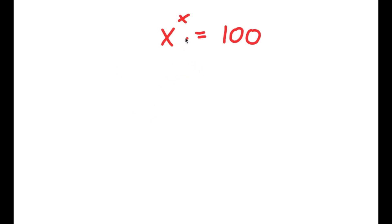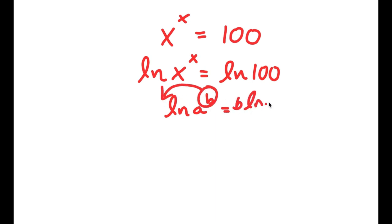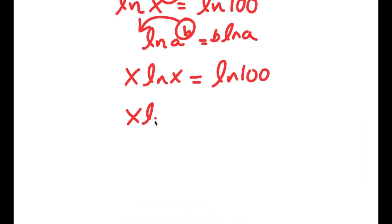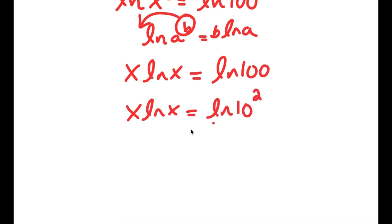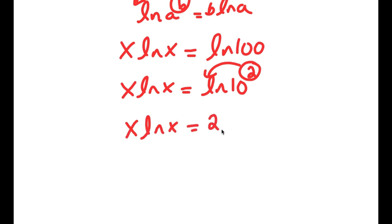In this problem, I have x to the power of x is equal to 100. I start by taking the natural log on both sides: ln of x to the power of x equals ln 100. Using the log power rule, I move x to the front to get x times ln x equals ln 100. Now ln 100 is ln of 10 squared, so applying the power rule again, I get x times ln x is equal to 2 times ln 10.